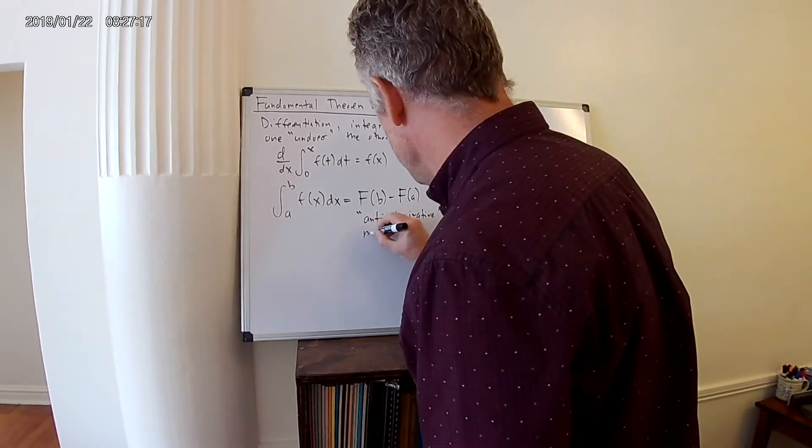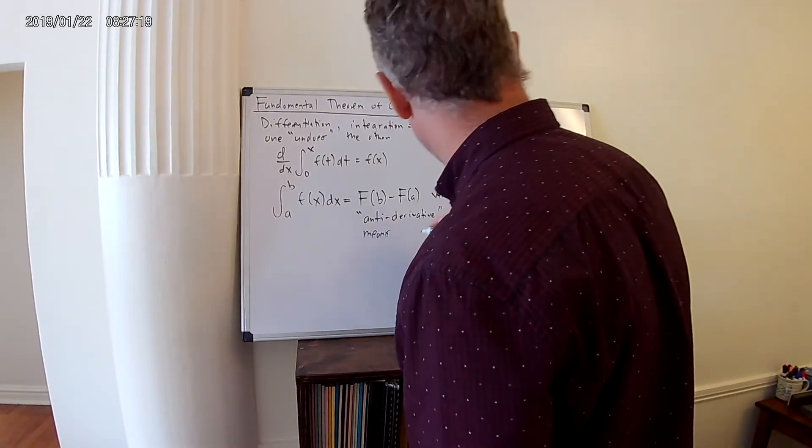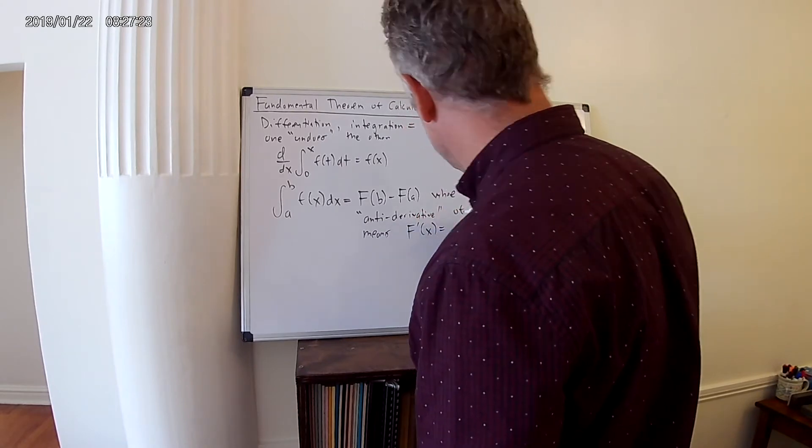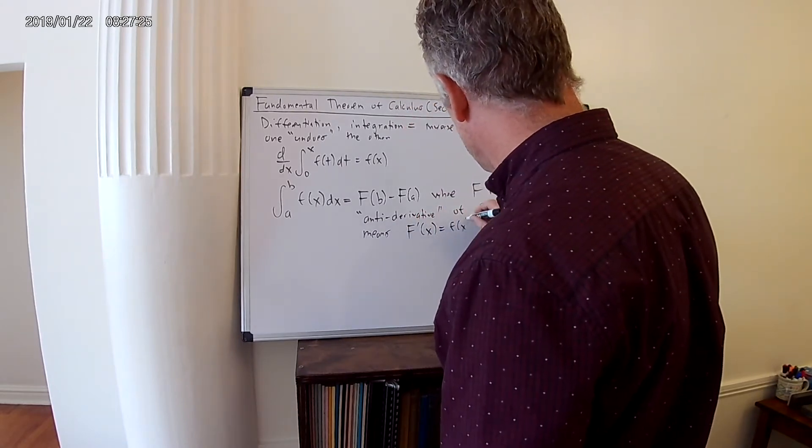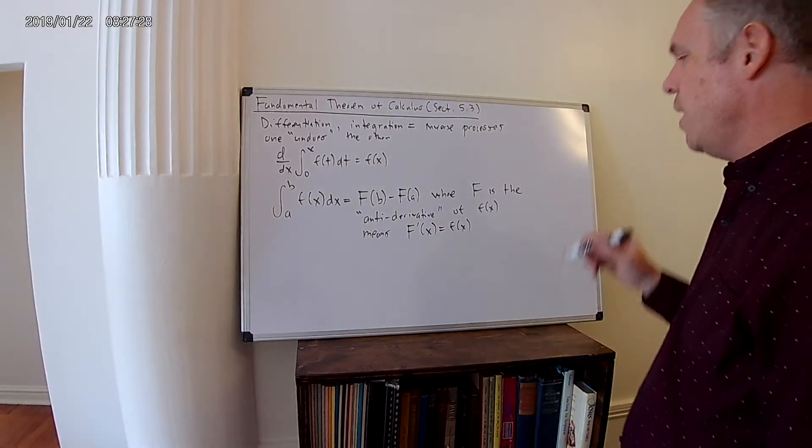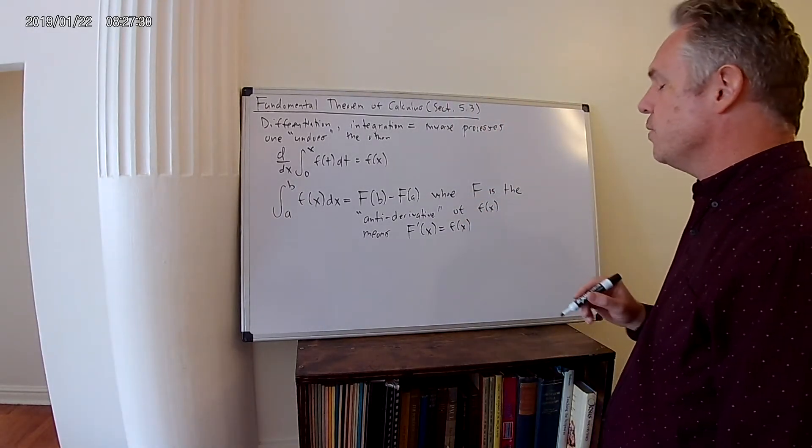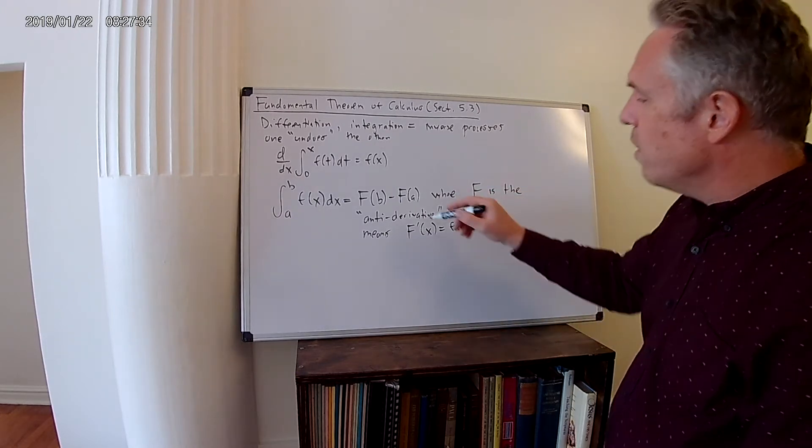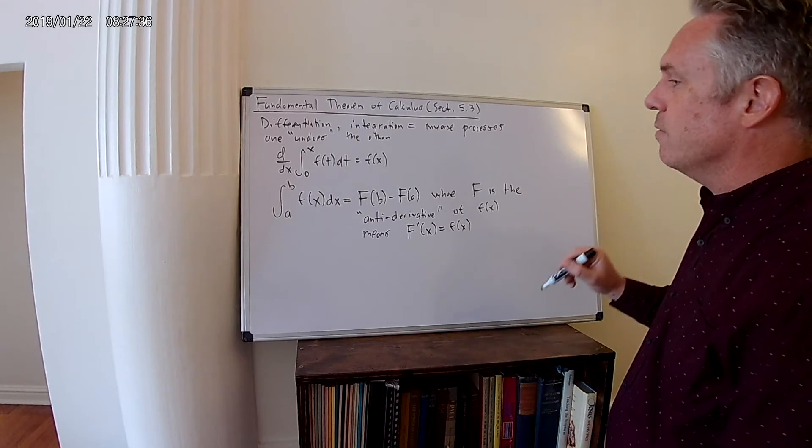Where F is the antiderivative of small f(x). What that means is F'(x) equals f(x). So capital F is the antiderivative of small f(x), meaning that capital F is a function whose derivative equals small f(x).